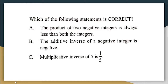The second question: which of the following statements is correct? The product of two negative integers is always less than both the integers. The additive inverse of a negative number is negative. Multiplicative inverse of 5 is 1 by 5. We have to find out which of these statements is correct.